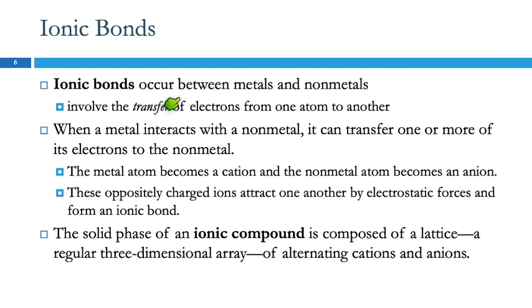Ionic bonds are going to occur between metals and nonmetals. You're not going to see ionic bonds between two metals or between two nonmetals. It's always one and the other. These involve a transfer of electrons. Metals in chemical reactions tend to lose electrons, and nonmetals tend to gain electrons. And so that's what's happening with an ionic bond.